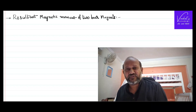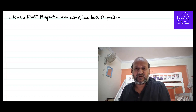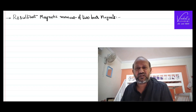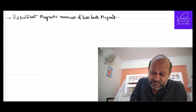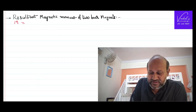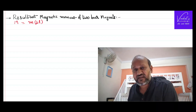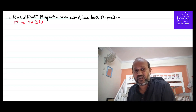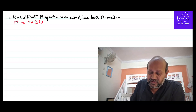Today we would like to talk about the resultant magnetic moment of two bar magnets that are in contact in different possible ways. To remind you once again, magnetic moment is the product of pole strength of the bar magnet with the length of the magnet. Pole strength is a scalar; magnetic length is a vector whose direction is from south to north inside a bar magnet.